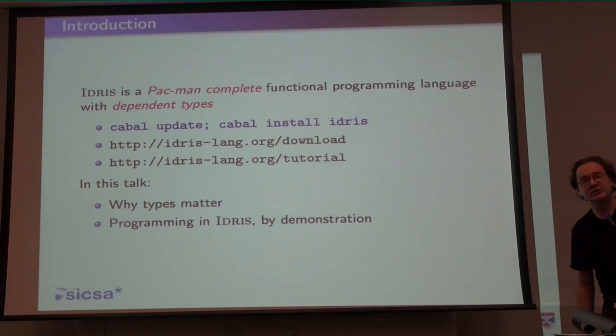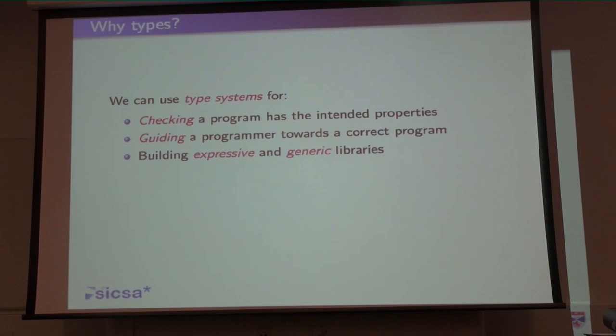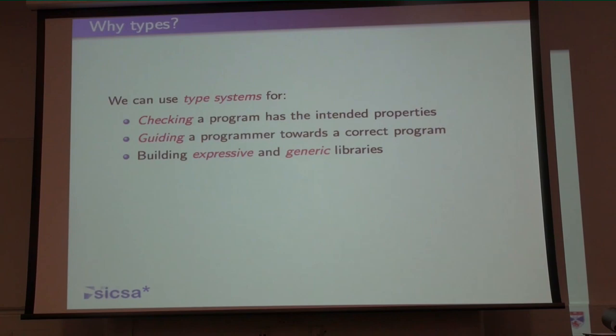So I'm going to talk about why types matter, and tell you a bit about programming in Idris. What are types for? Well, I've given you a little bit of motivation with the Mars Climate Orbiter — it's for making sure that we get the program right before we run it. Checking a program has the intended properties, checking it against its given plan and ensuring everything is working consistently. Also, we're starting to see it more even in Haskell these days: using types to guide a programmer towards the correct program.